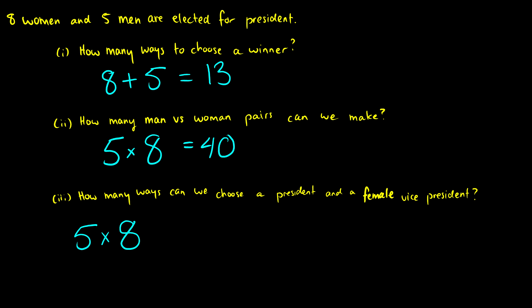So this is our male-female pair, and then we're going to have a female-female pair. So we have eight choices for a woman as president, and then we have seven choices for the remaining woman as president.